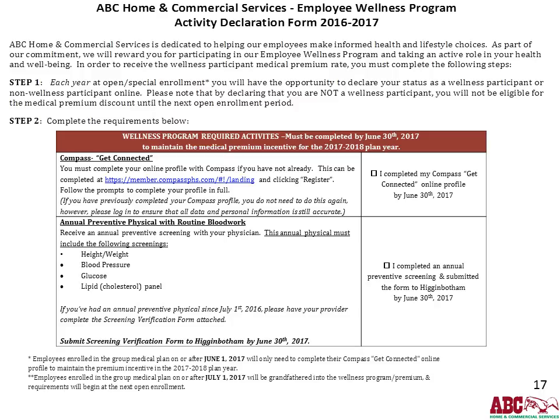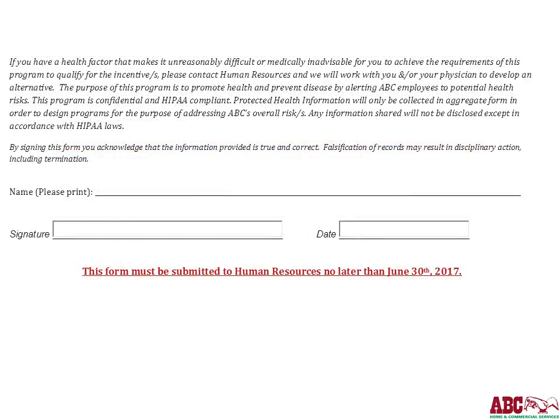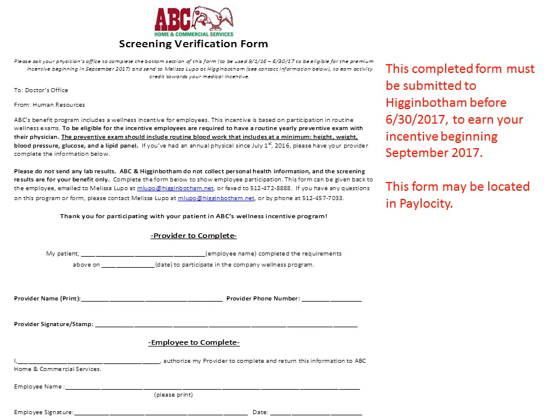Employees enrolled on or after July 1 will be grandfathered into wellness program premium rates and will begin at the next open enrollment. If a health factor makes it unreasonably difficult to achieve these requirements, complete the applicable form and send it to HR no later than June 30, 2017. The screening verification form will be in Paylocity or Web Benefits, and must be submitted to Higginbotham on or before June 30, 2017 to earn your incentive beginning September 2017.